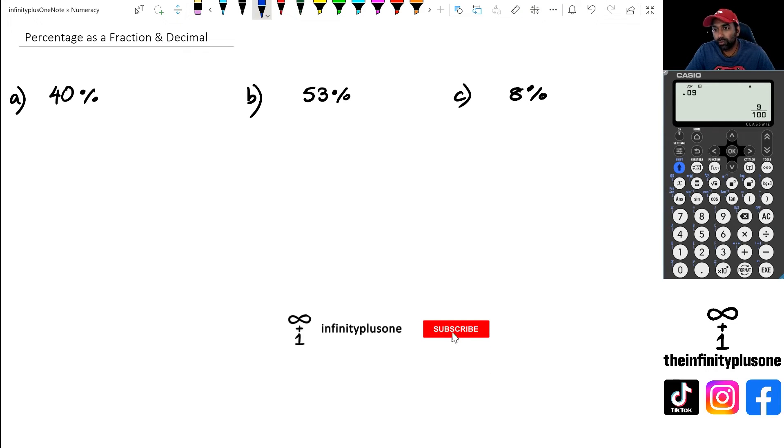All right, so if you've been following my video series you know that if you want to convert something to a percentage you multiply it by 100. But when we're going the other way from percentage to a fraction or a decimal, all you have to do is divide by 100.